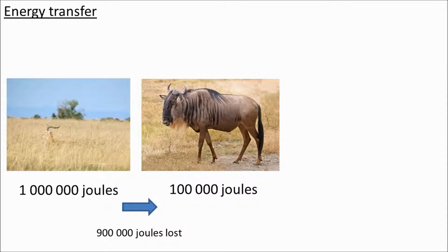The energy that is taken up by the animal is going to be used by the animal respiring, doing respiration, keeping warm at night. A lot of the energy will be used up on that animal just moving around. So barely any of that energy goes on growth. Let's say 100,000 joules out of that million — 100,000 joules of that grass energy ends up in the wildebeest body.